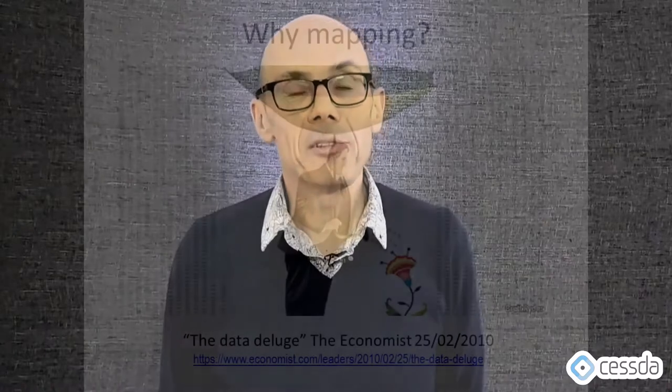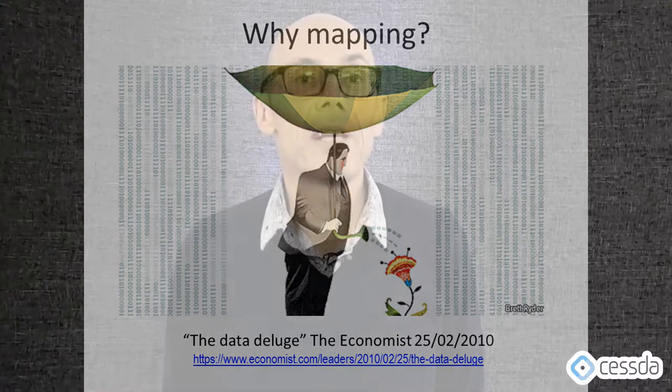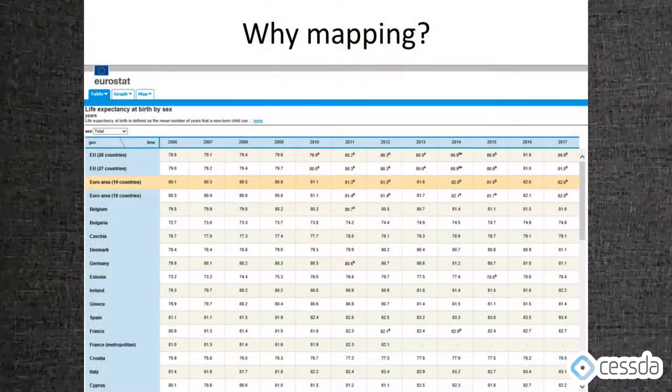Trying to understand why we map: The Economist ran in 2010 a special issue on the data deluge. There is so much data — especially socioeconomic data — coming our way as social scientists. One way to visualize it is through graphs and interesting visualizations; another way is through maps. Maps are tools that people can understand very easily, they can identify patterns on them, and we can communicate better.